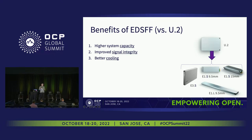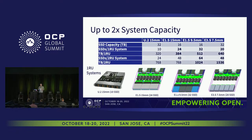The quick pitch on why EDSFF compared to U.2 comes down to three main things: capacity, signal integrity, and cooling. When I talk about capacity, it's not just about drive capacity — it's really about at the rack level, at the rack unit level, how much storage capacity you can fit in. Depending on the specific type of server you're using, EDSFF will allow up to twice the capacity per rack unit compared to U.2.